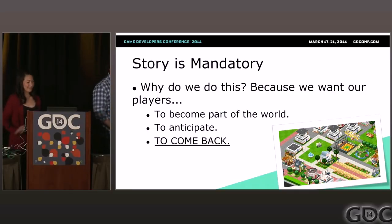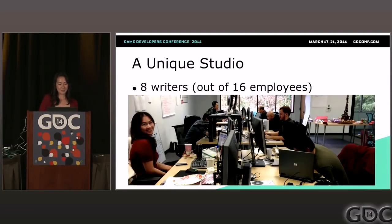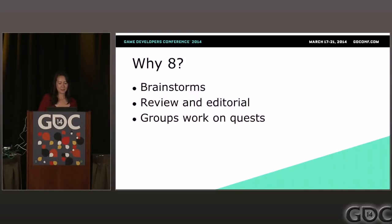I'll talk a little bit more about both the tools that we use to create this narrative and also how we set up our team to do it. We have a unique studio structure. Out of 16 employees, we have eight writers — this is the team dedicated to crafting the ongoing narrative. Why do we have eight? This is not necessarily a magic number; we've just found that this is what works for us.